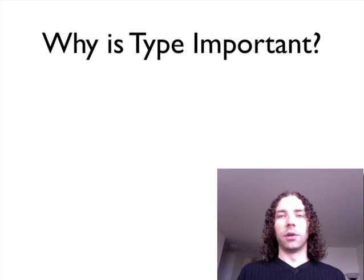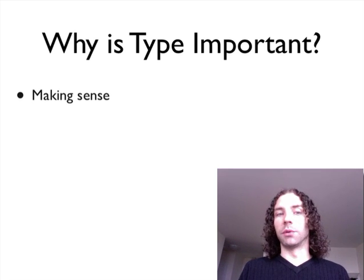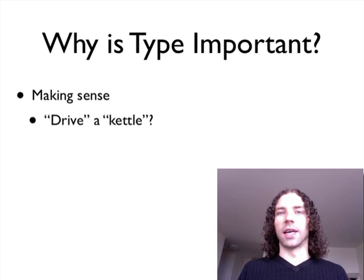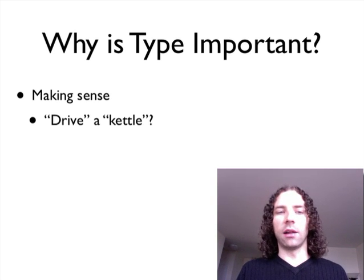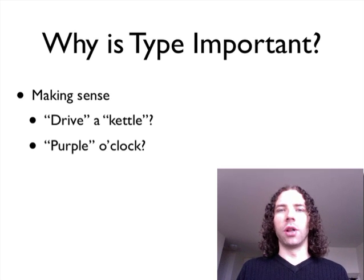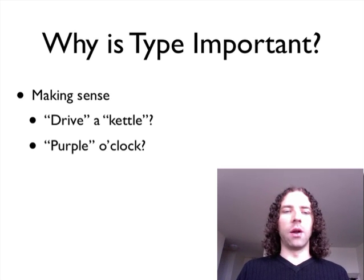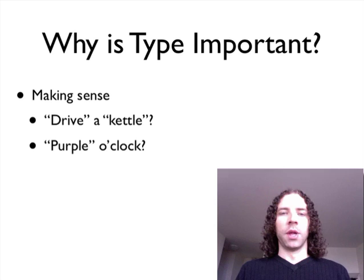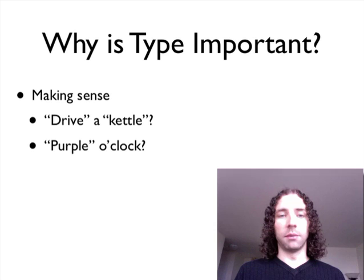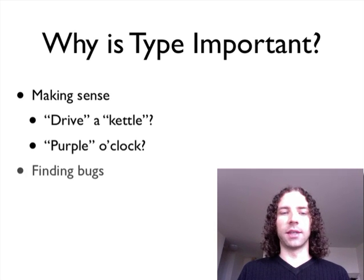So why is type important? Well, the obvious reason comes down to making sense. You need to make sure that things are actually consistent. You can't drive a kettle. There's no such thing as purple o'clock. You kind of want to know what these things actually are. That interface describing how things interact is important because otherwise it's just nonsense.